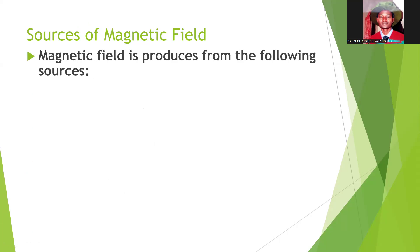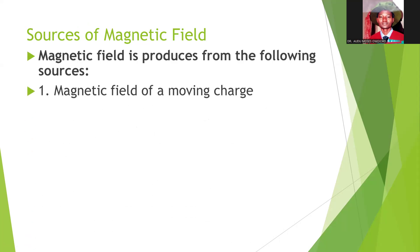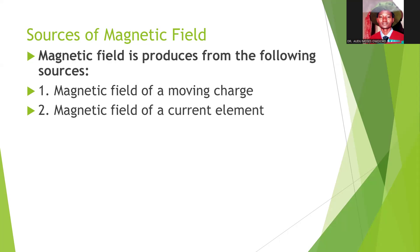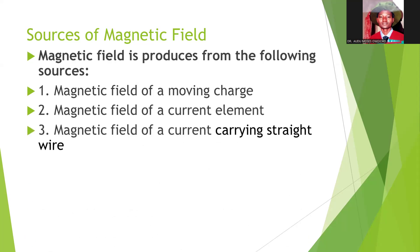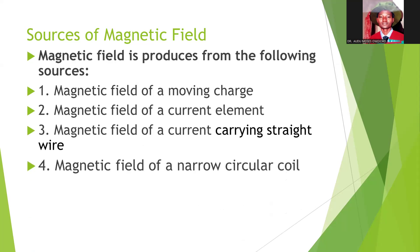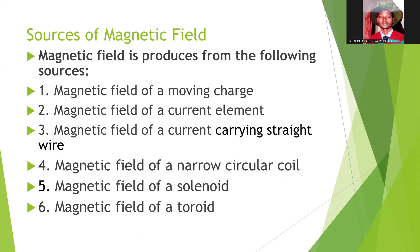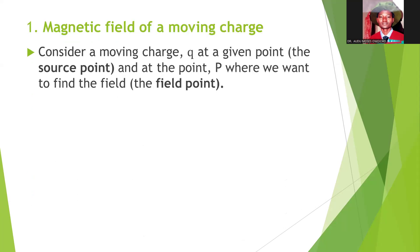Let's look at sources of magnetic field. Magnetic field is produced from the following sources: magnetic field of a moving charge, magnetic field of a current element, magnetic field of a current carrying conductor, magnetic field of a narrow circular coil, magnetic field of a solenoid, and magnetic field of a toroid.